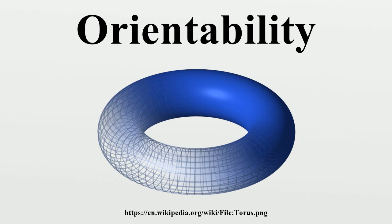Any surface has a triangulation: a decomposition into triangles such that each edge on a triangle is glued to at most one other edge. Each triangle is oriented by choosing a direction around the perimeter of the triangle, associating a direction to each edge. If this is done in such a way that, when glued together, neighboring edges are pointing in the opposite direction, then this determines an orientation of the surface. Such a choice is only possible if the surface is orientable, and in this case there are exactly two different orientations.